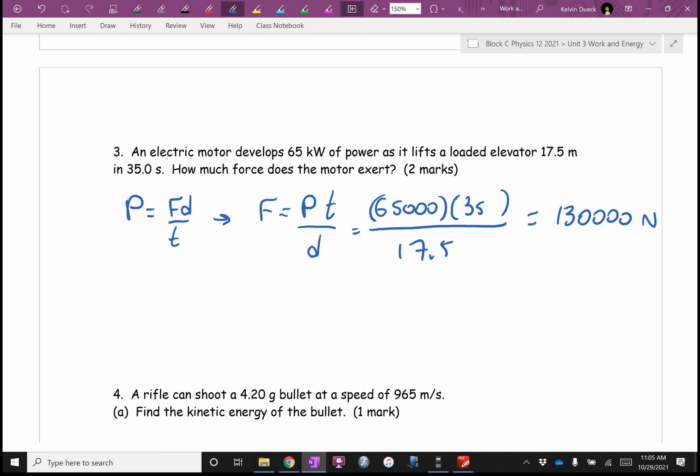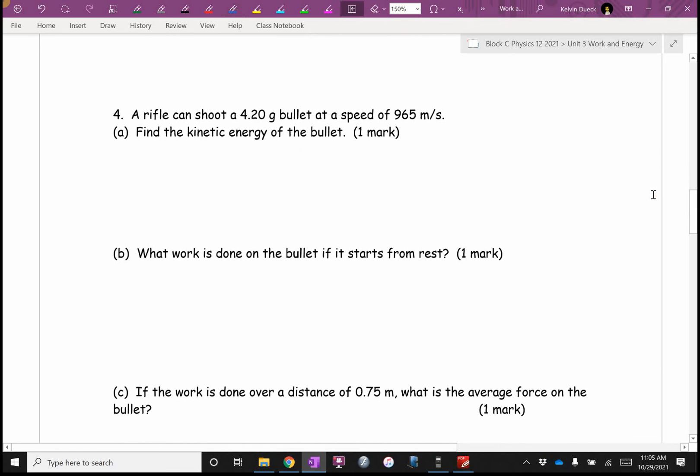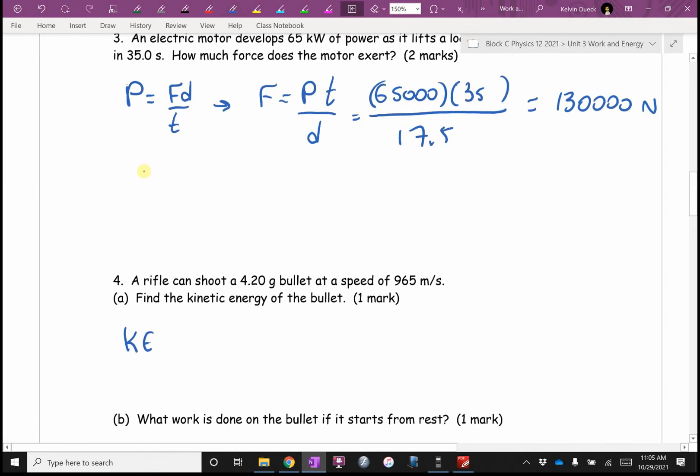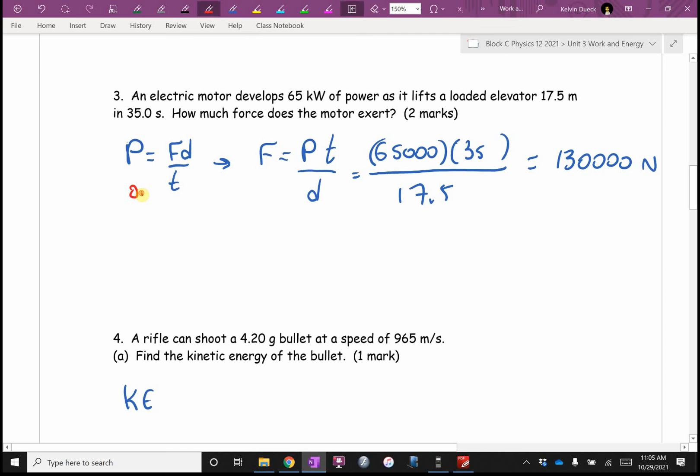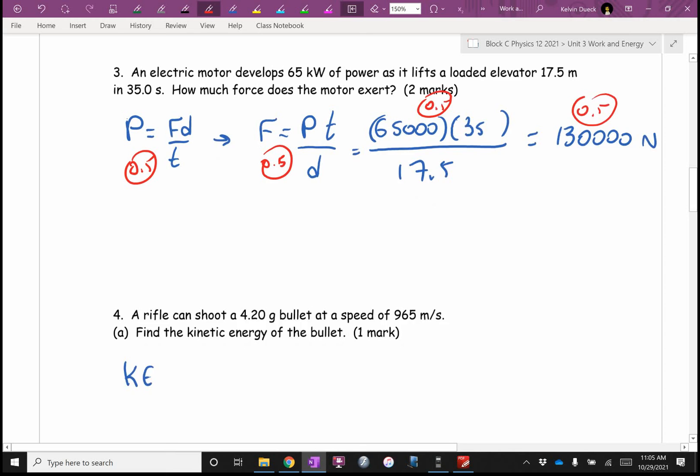And again, F equals what? Notice we found force without m or a. I don't know either of those, but okay, a little cleverness. Find the kinetic energy of the bullet. Well, kinetic energy. Oh, that last one was two marks. I would probably go something like this: half mark if I saw that, half mark if you got the F by itself, half mark for the numbers, and a half mark for the answer.